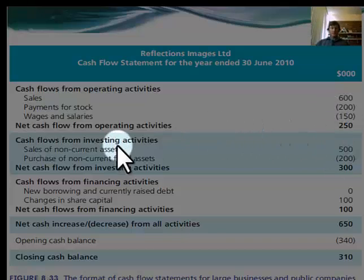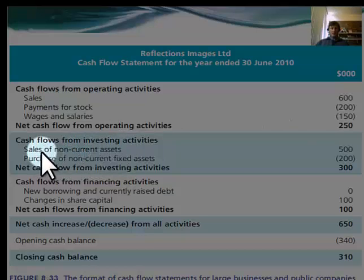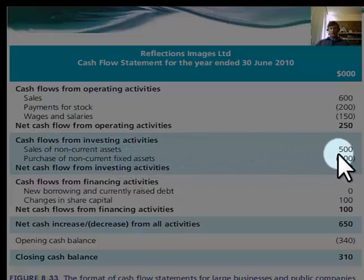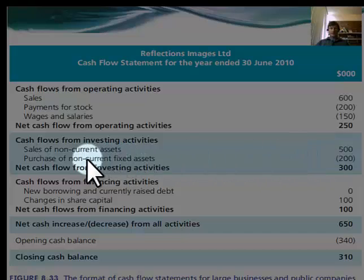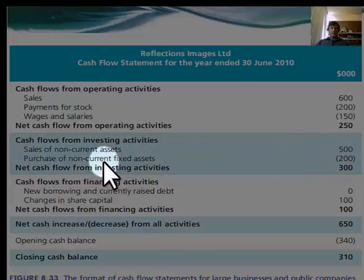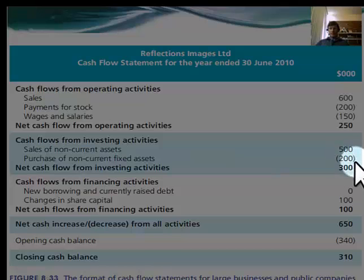The next section is investing activities. We're looking at any sale of non-current assets — for example, we might have sold a machine, a piece of land, a building, or something like that. When we buy non-current fixed assets, they are an outflow, represented as a negative. From this example, we've had a positive inflow from investing activities of $300.